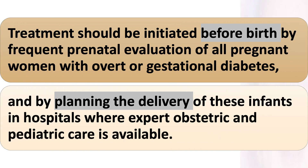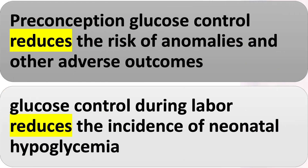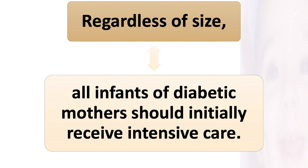Treatment should be initiated before birth by frequent prenatal evaluation of all pregnant women with overt or gestational diabetes, and by planning delivery in hospitals where expert obstetric and pediatric care is available. Preconception glucose control reduces the risk of anomalies and other adverse outcomes. Glucose control during labor reduces the incidence of neonatal hypoglycemia. Regardless of size, all infants of diabetic mothers should initially receive intensive care.